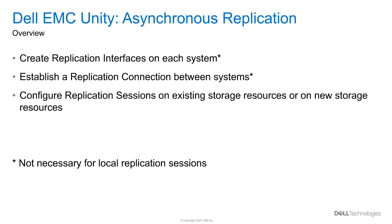Before creating a replication session between two systems, replication interfaces must be created on each system and a replication connection between the systems must be established. A replication interface is used to transport data to a destination system, and at least one replication interface must be created on each SP of the system. The replication connection is a trusted link created between the systems participating in replication, used for replication management operations and the data path between the pair of remote systems. Once the replication connection is established, replication sessions on storage resources can be created. Note that replication interfaces and a replication connection are not required for pool-to-pool replication.